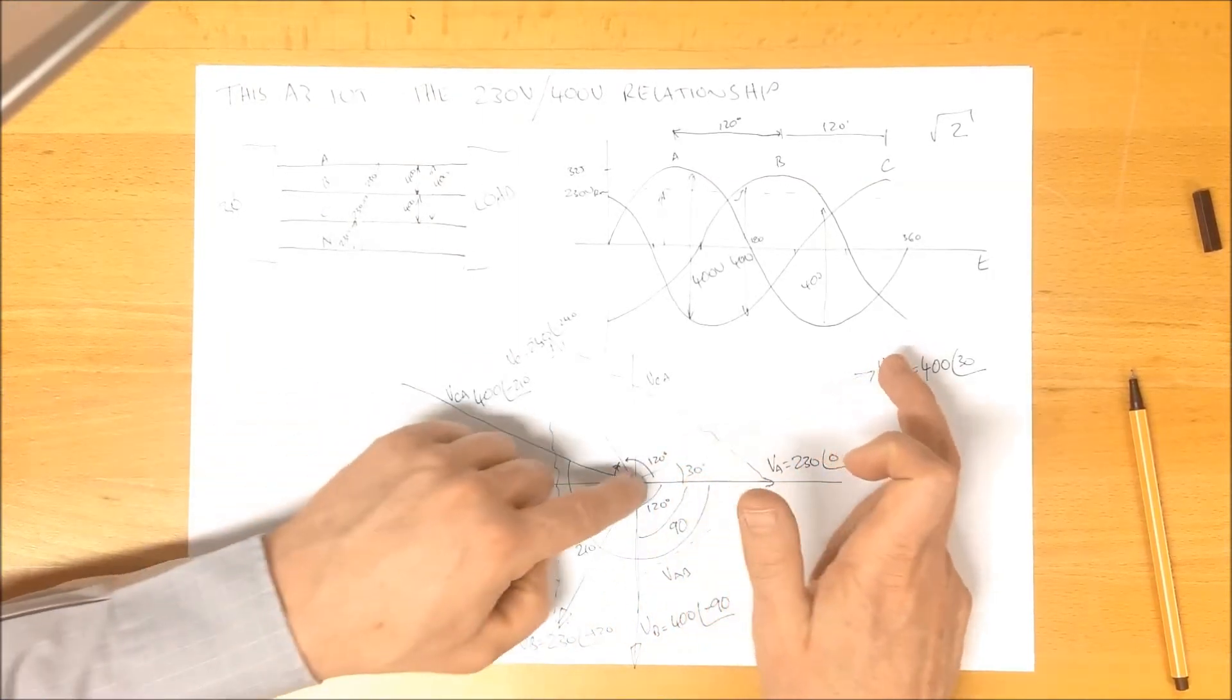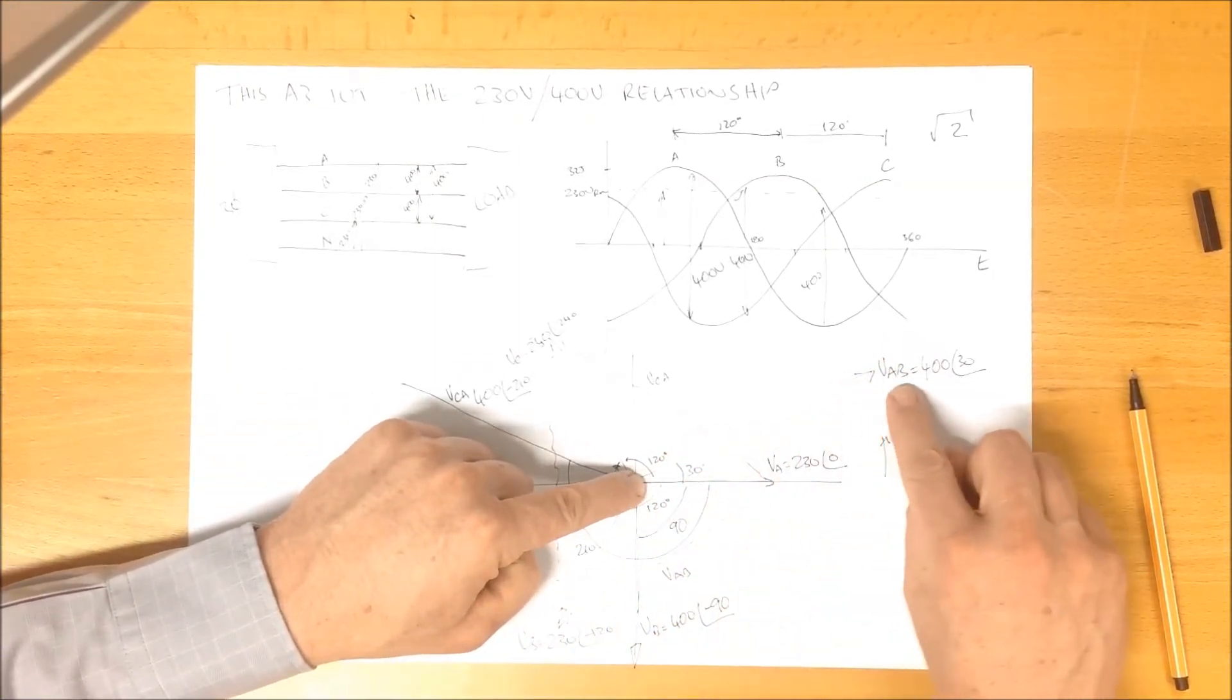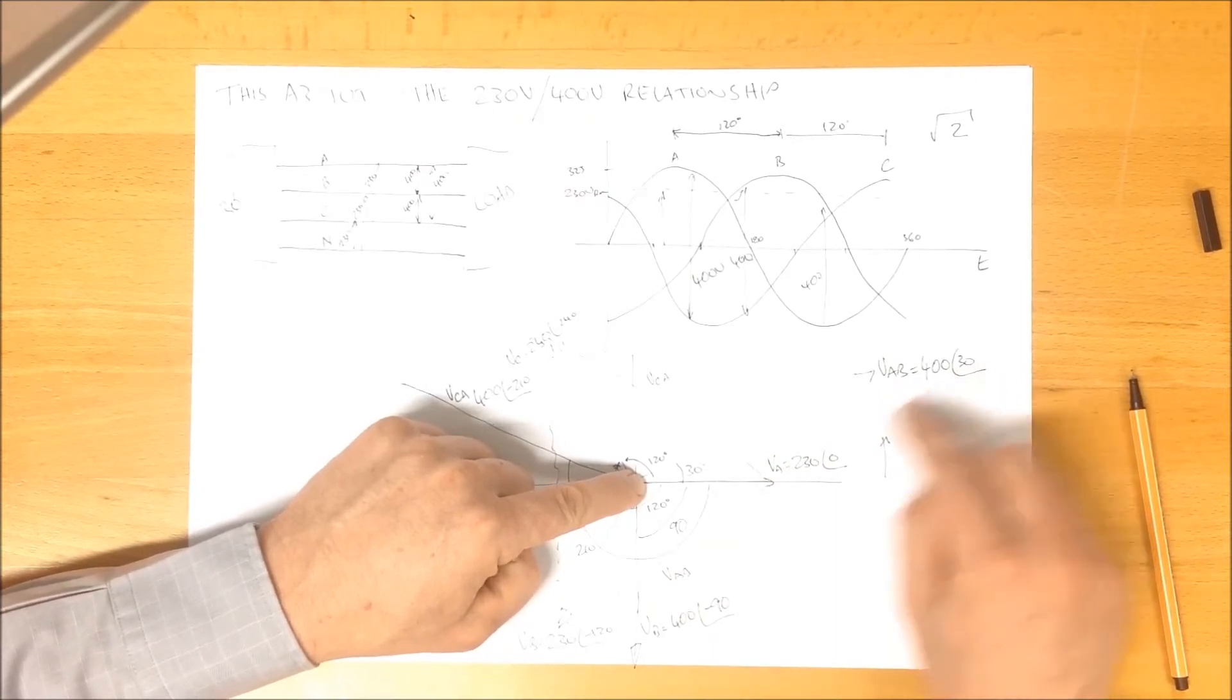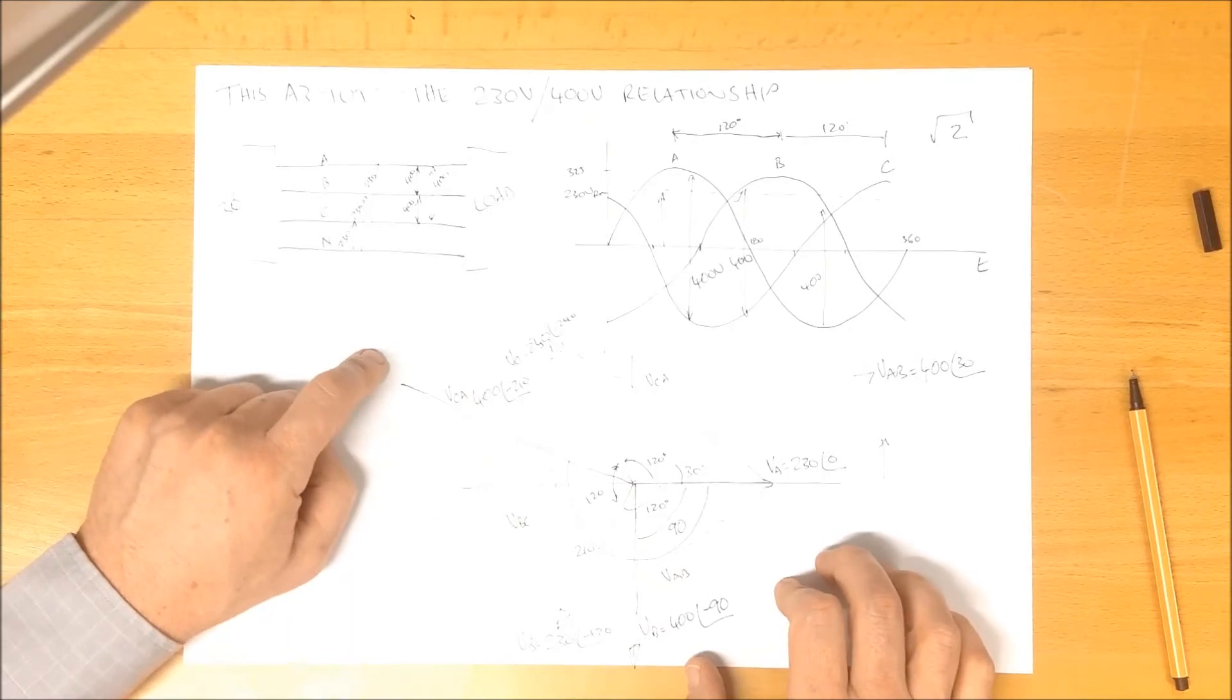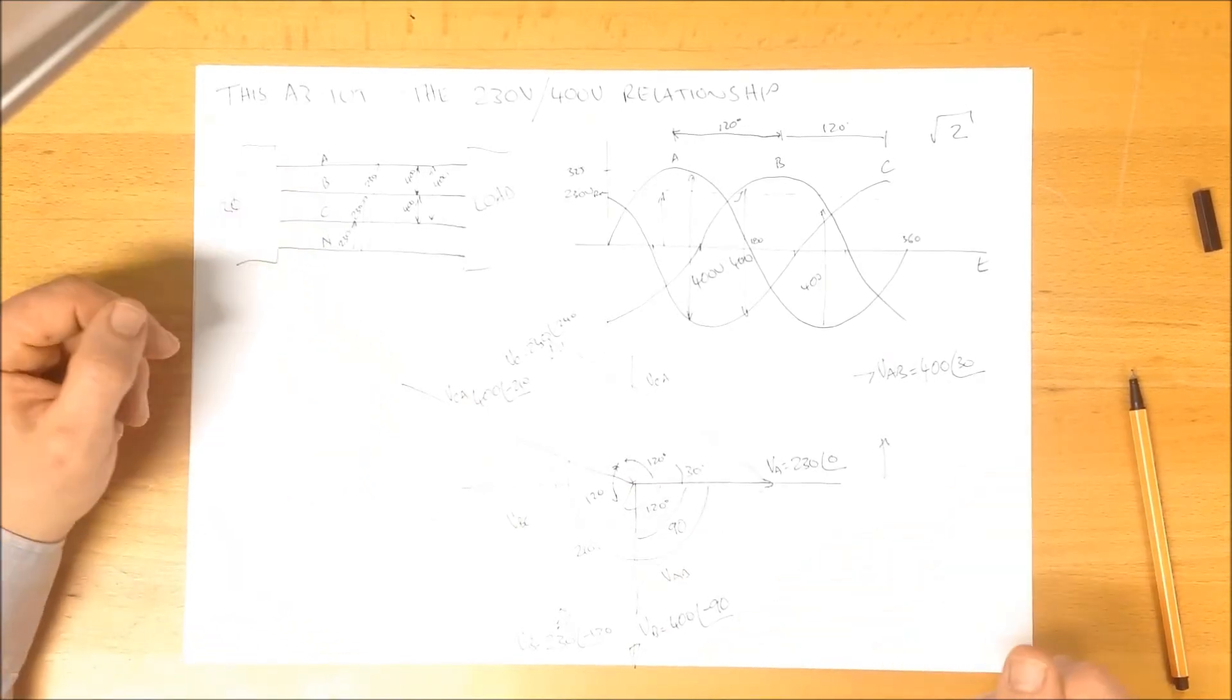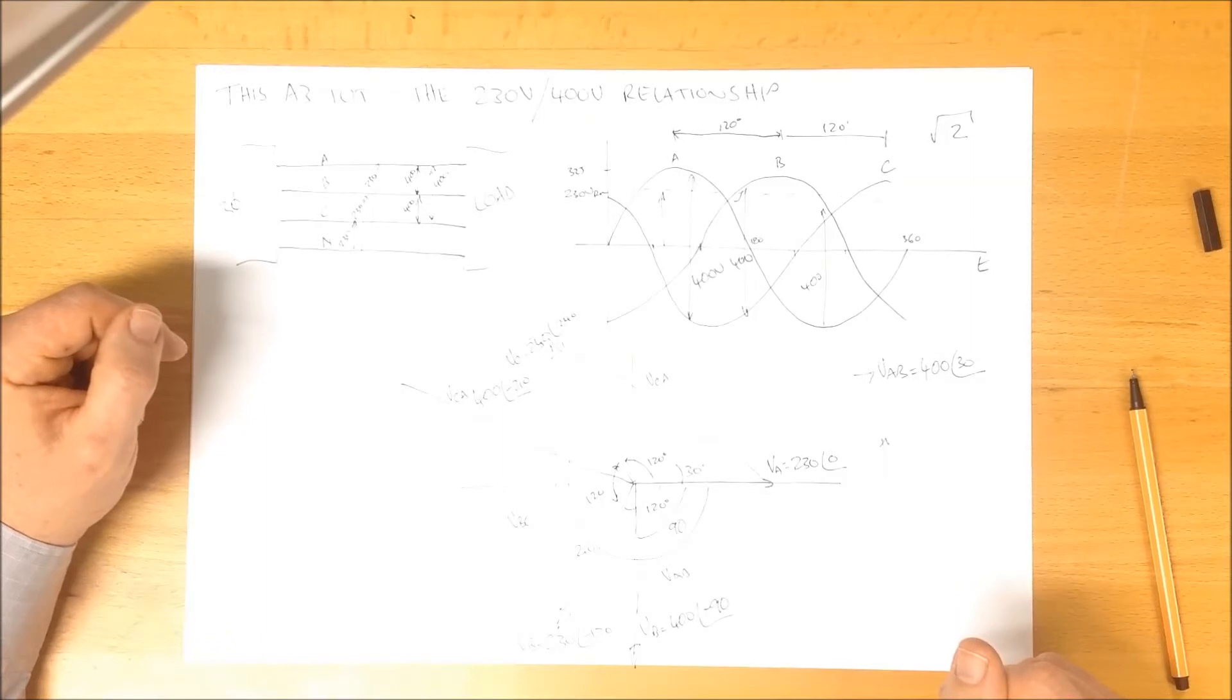And we end up with 400 at 30 degrees, 400 at minus 90, and 400 at 210. That is the relationship between 230 and 400.